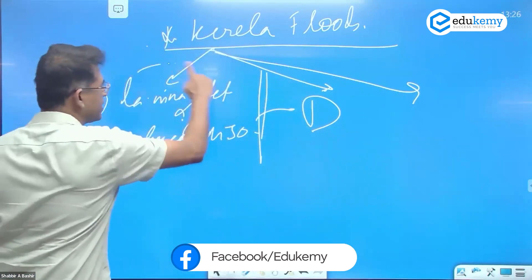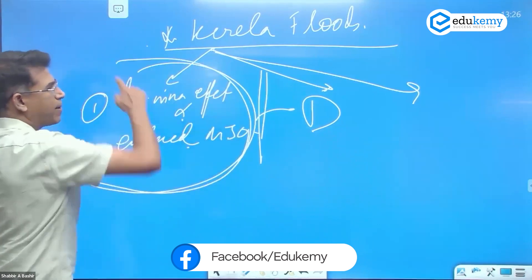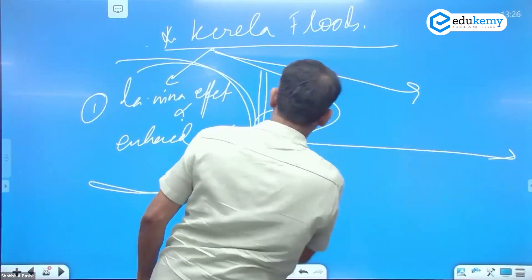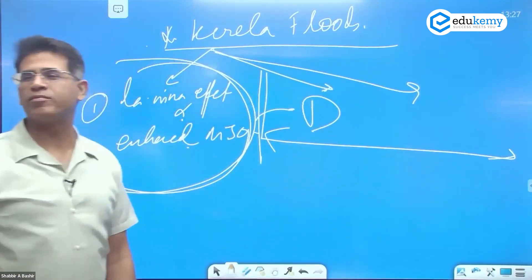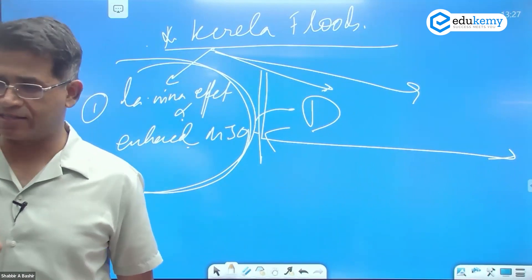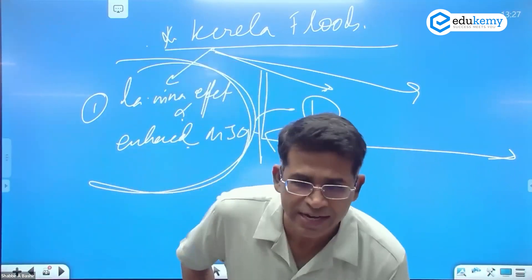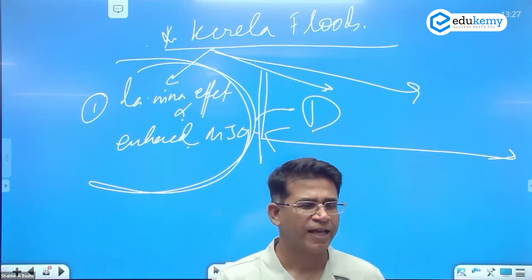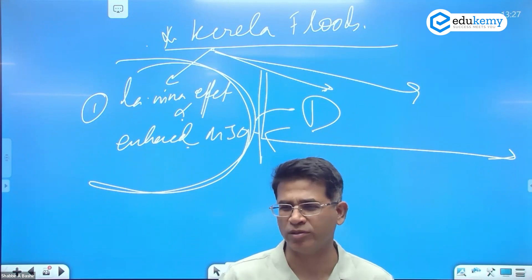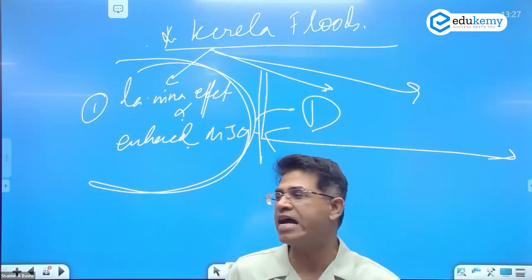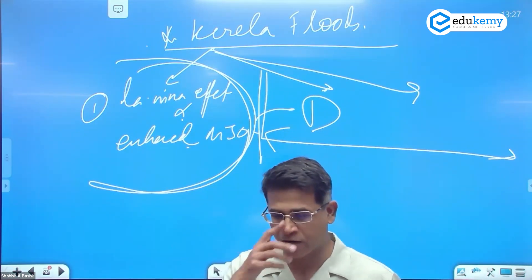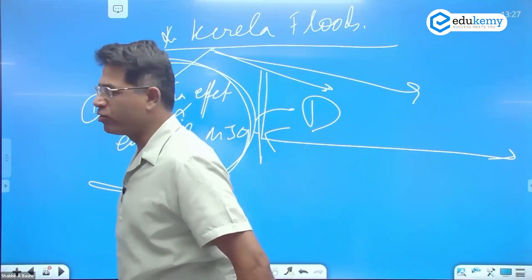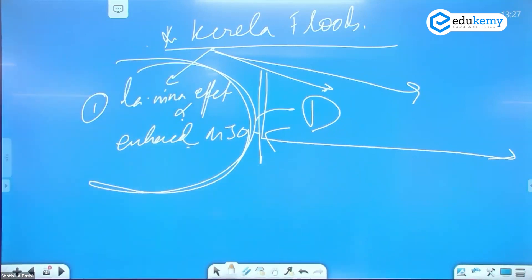This was a human governance problem. The trigger for Kerala floods was unusually heavy rains in May and June because of La Nina effect and enhanced rainfall because of positive IOD and MJO. This was meteorological.